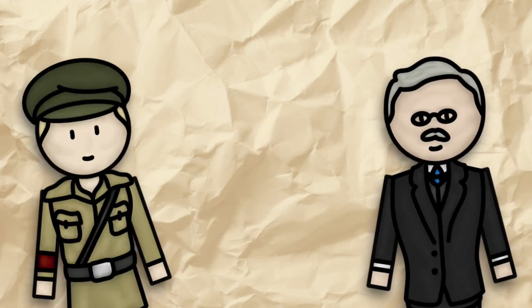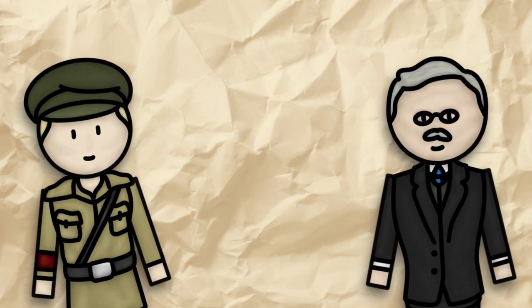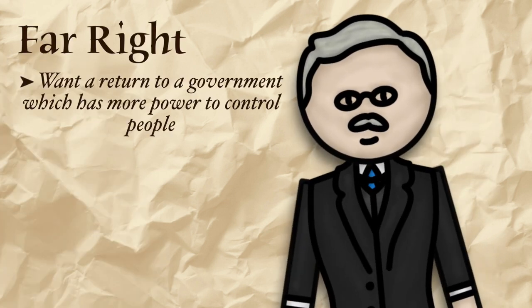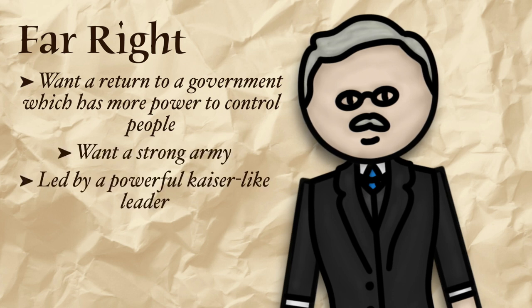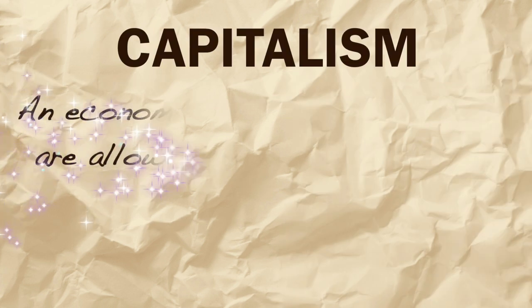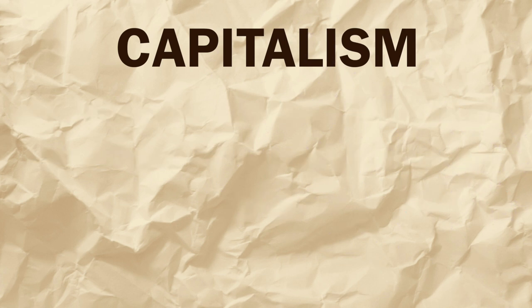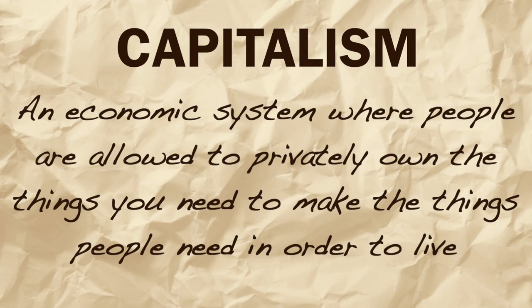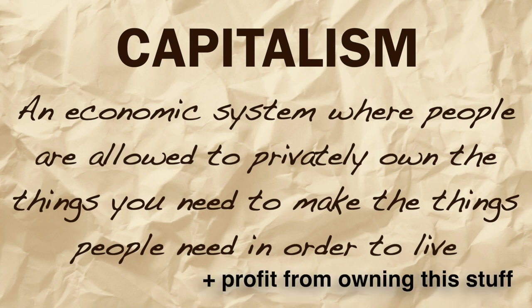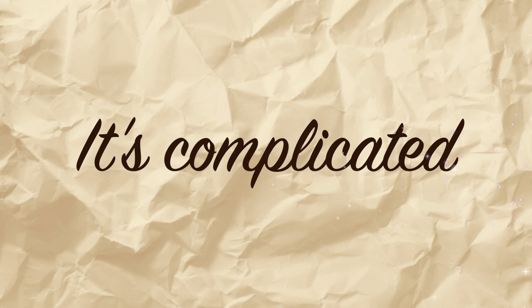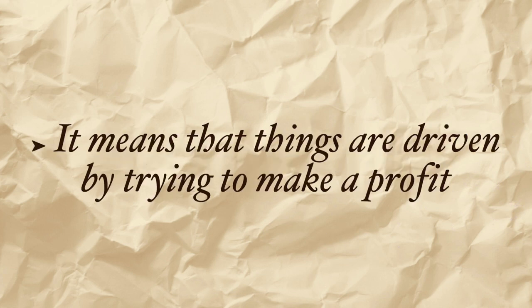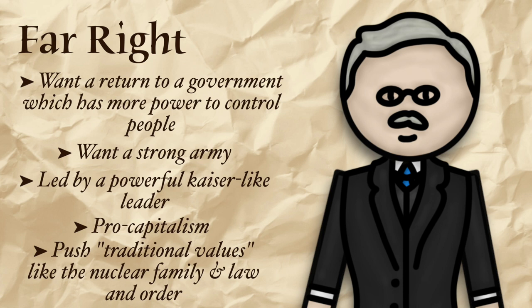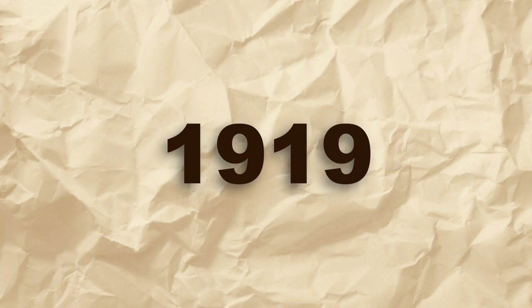Both the far-left and right oppose the existence of the Weimar Republic, although for different reasons. The extreme right want a return to a strong government, where the government has more power to control people, with a strong army, and headed up by a powerful leader like the Kaiser. They are pro-capitalism — an economic system where people are allowed to privately own things such as farms and factories needed to produce goods, and to profit off owning these things — meaning profit is a driving economic motive. They also push traditional values, such as nuclear families and law and order. In 1919, the main far-right party is the DNVP.